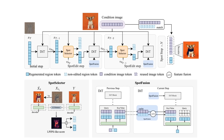So how does Spot Edit actually pull this off? It comes down to two really smart components. First, there's Spot Selector, which is basically a detection system that figures out which parts of the image are staying the same and which parts need to change. It does this by measuring something called perceptual similarity — it compares the early reconstruction to the original image and identifies regions that have stabilized early in the diffusion process. Those stable regions get classified as non-edited, and Spot Edit just skips regenerating them entirely. The second component is Spot Fusion, which keeps everything coherent. When you skip certain regions, you need to make sure the edited parts still blend naturally with the unchanged areas. Spot Fusion adaptively blends features from the original image with the new content based on the current timestamp, so you don't get weird boundary artifacts or mismatches. It's all training-free, which means it works on top of existing models without needing any fine-tuning.